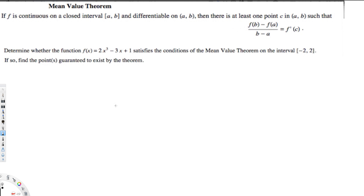So first of all, what is the Mean Value Theorem? The Mean Value Theorem says that if f is continuous on the closed interval [a, b] and differentiable on (a, b), then there's at least one point c in (a, b) such that f(b) minus f(a) over b minus a is equal to f prime of c.